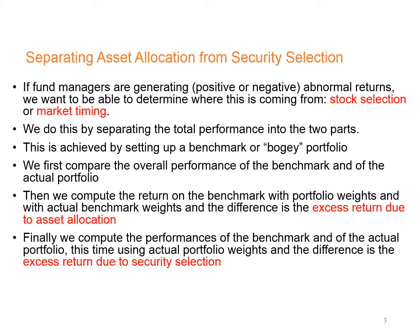Asset return of a portfolio can come from either asset allocation or security selection. A portfolio manager's total value added performance is the sum of the allocation and selection effects. The performance attribution analysis compares the manager's total return to the return of a predetermined benchmark portfolio, and the difference is decomposed into allocation and selection effect.